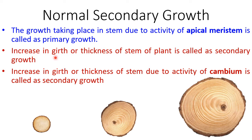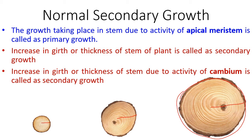Secondary growth — that is, increase in girth or thickness of the stem of a plant — is called secondary growth. Another definition: increase in girth or thickness of the stem due to the activity of cambium is called secondary growth. If you see here, this is a one-year-old stem where you can see primary growth. As it grows, the thickness increases, and there is increase in the girth. Here you can see this girth from the center is very less, a little bit more further, and the biggest of all at the outermost. So when there is increase in the girth, such type of growth is called secondary growth.